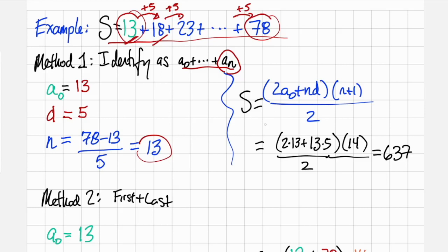If we apply the formula from the previous page, we see that s is equal to 2a0 plus nd times n plus 1, or in other words, 2 times 13 plus 13 times 5 times 14 divided by 2, and we get 637.